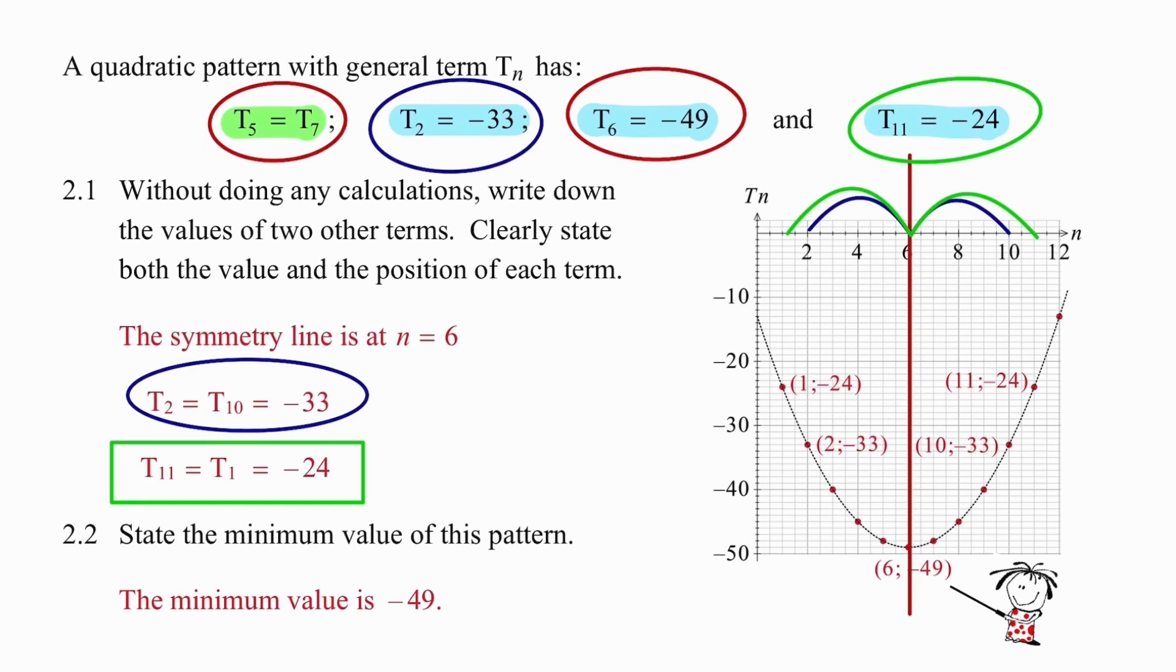I've already figured out in the process of answering 2.1 that t6 is a unique value and it will be the minimum value of this pattern.